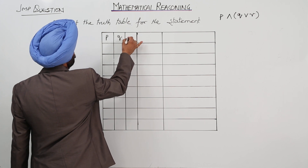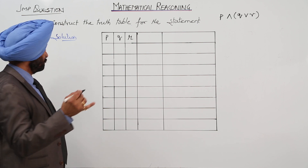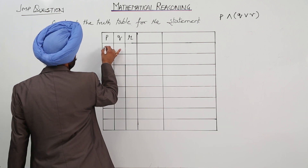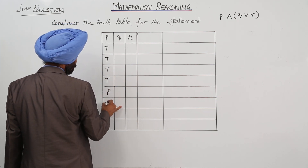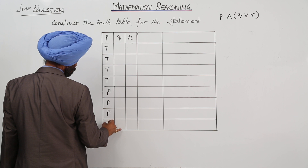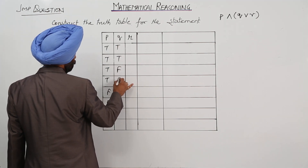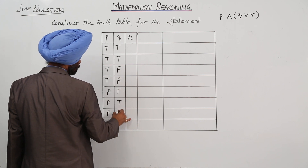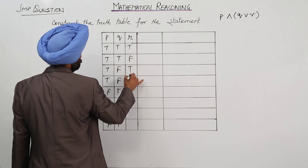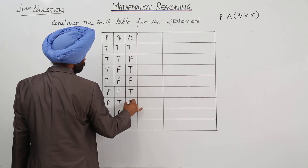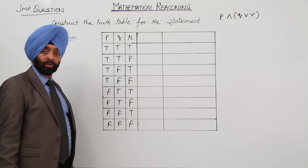The statements we are having are P, Q, and R. Now, how to fill it: first go for true, then for false, then double true, double false, double true, double false, then true, false, true, false, true, false, true, false.